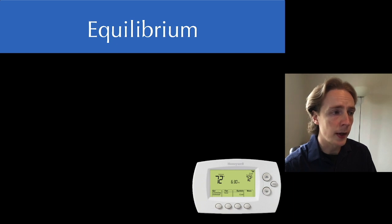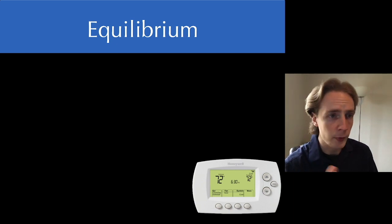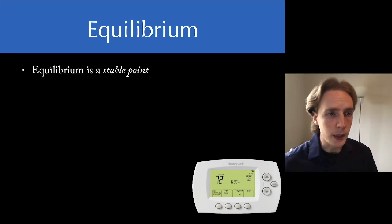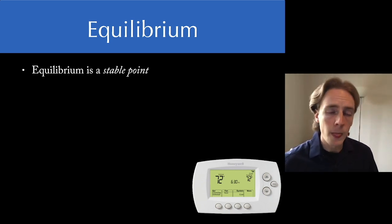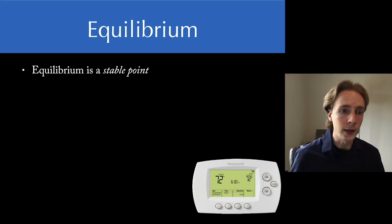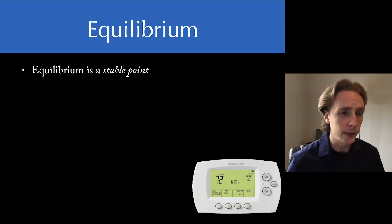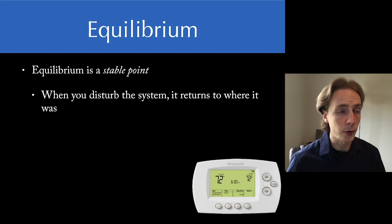The intersection point does represent an equilibrium, but I also want us to know what it means for something to be an equilibrium, because equilibrium is not just an economic concept. Equilibrium is applicable to physics, chemistry, biology, engineering — all kinds of different fields. All equilibrium means is that we have a stable point. We have a system with some number of variables, and if we disturb one of those, it's going to return back to that stable point.